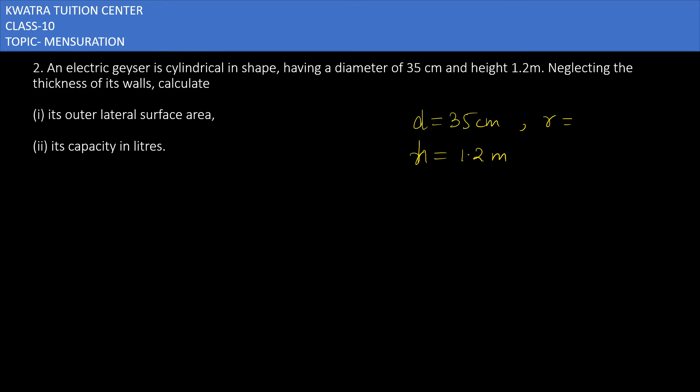So the radius will be 17.5 or you can write 35 over 2, one and the same thing. You can use this or you can use this for the calculation. Height will be 120 cm.